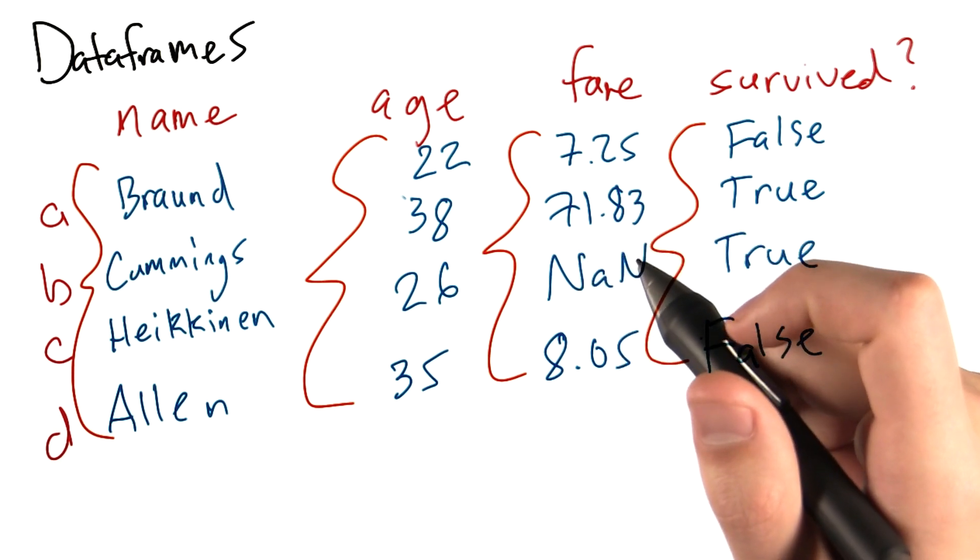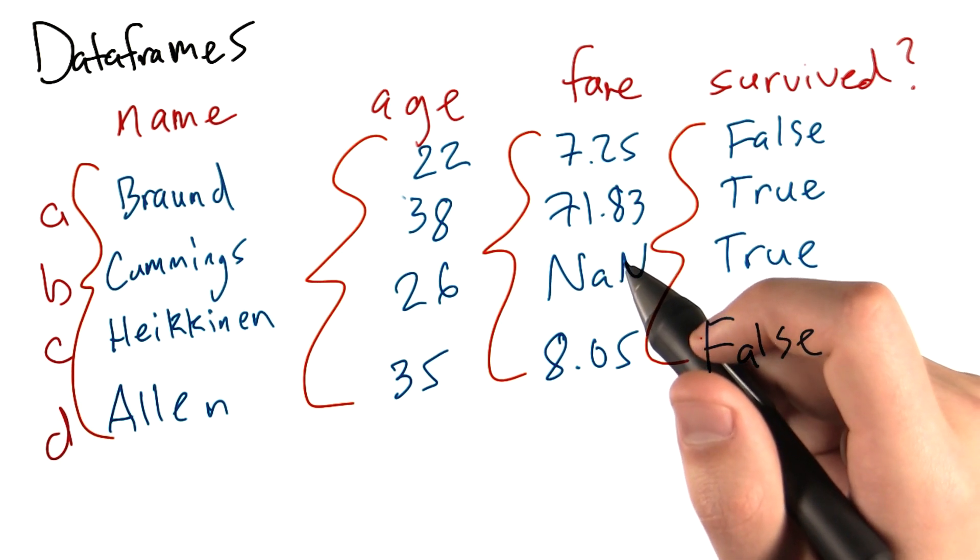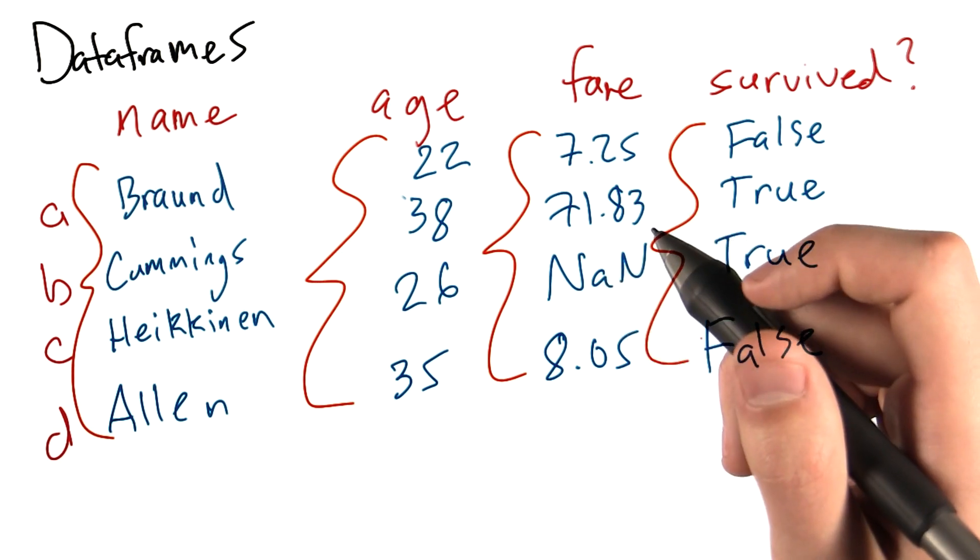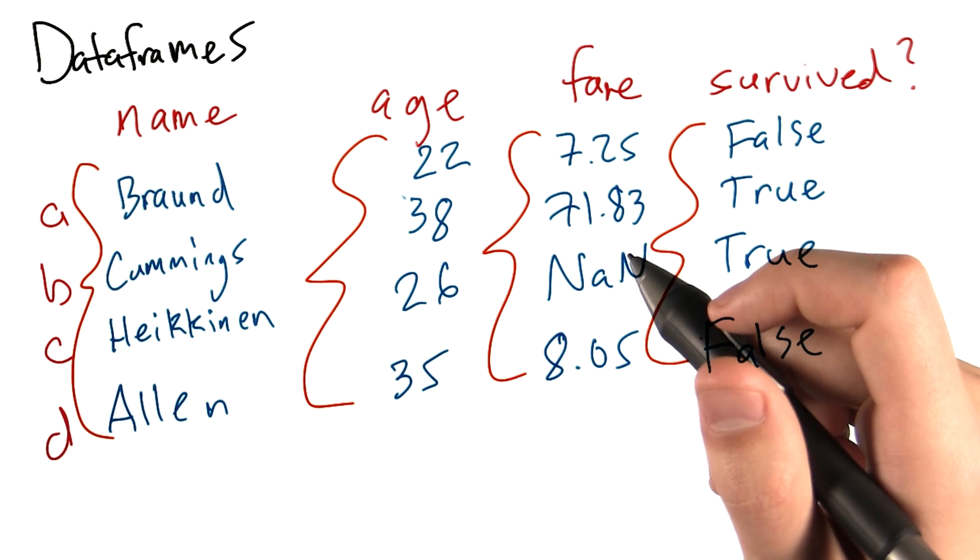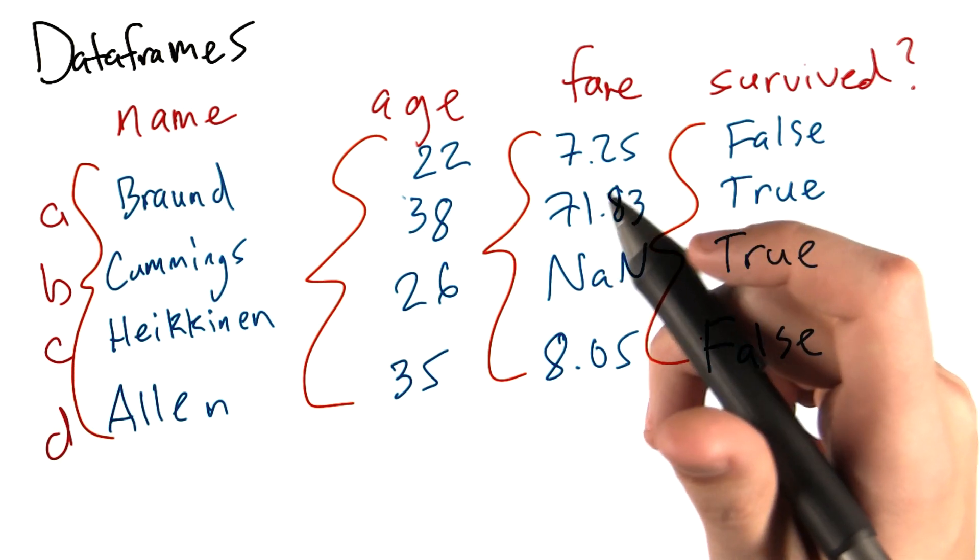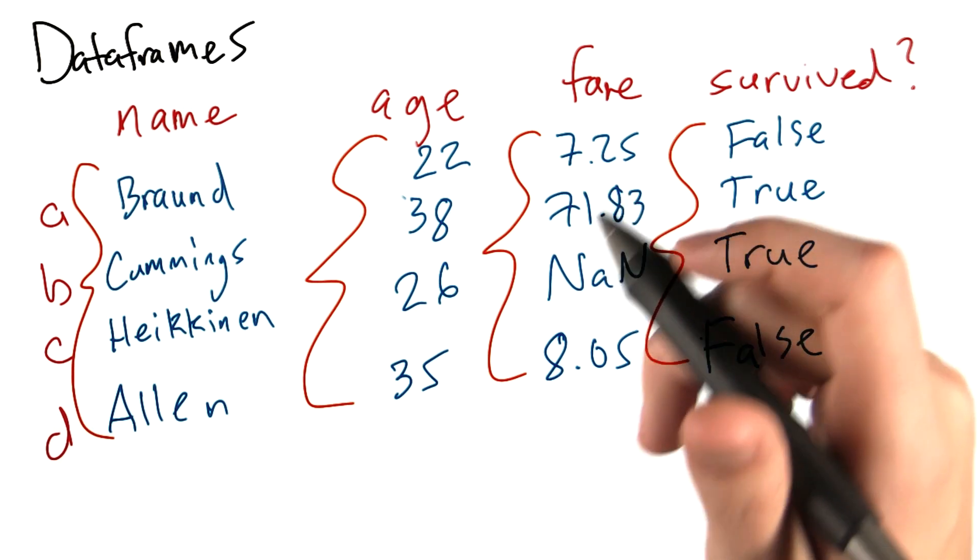We'll talk about making data frames in a bit. For now, here's what an example data frame might look like, using data describing passengers on the Titanic and whether or not they survived the Titanic's tragic collision with an iceberg.